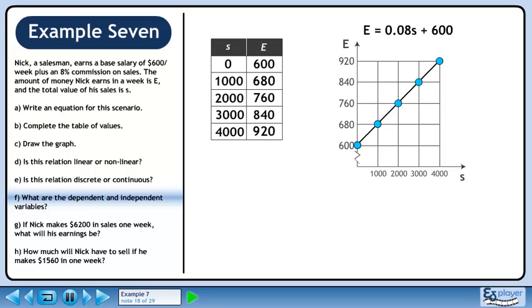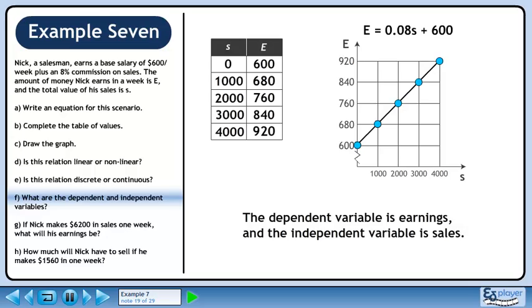In Part F, we are asked, what are the dependent and independent variables? The dependent variable is earnings, and the independent variable is sales.